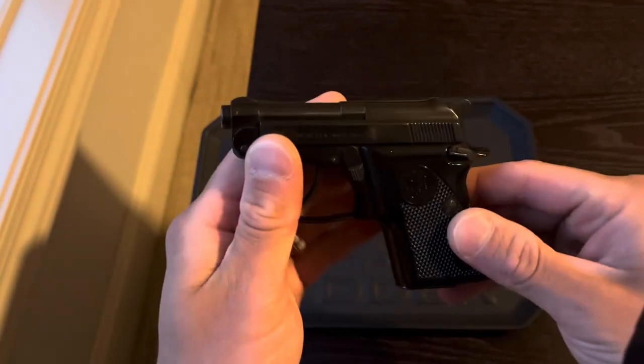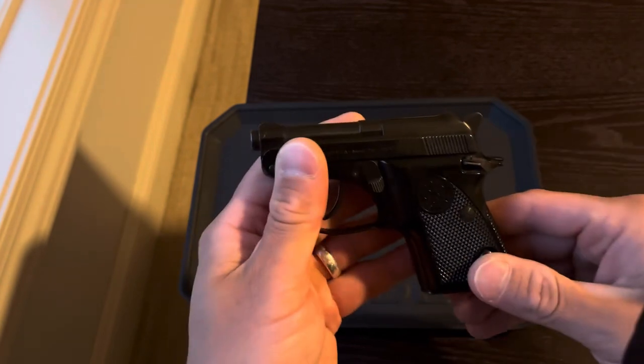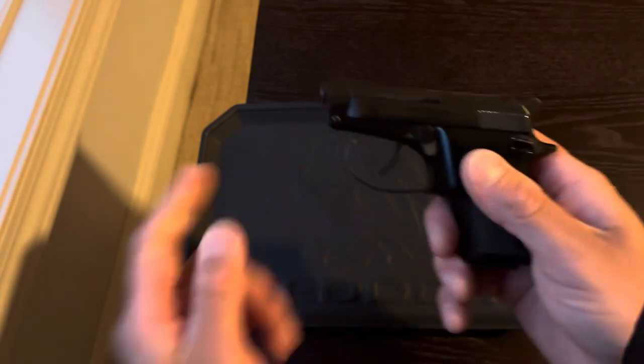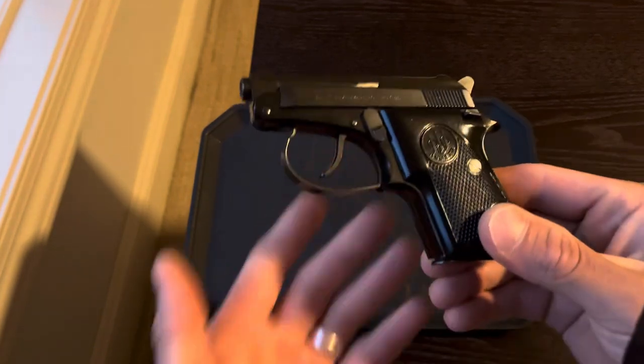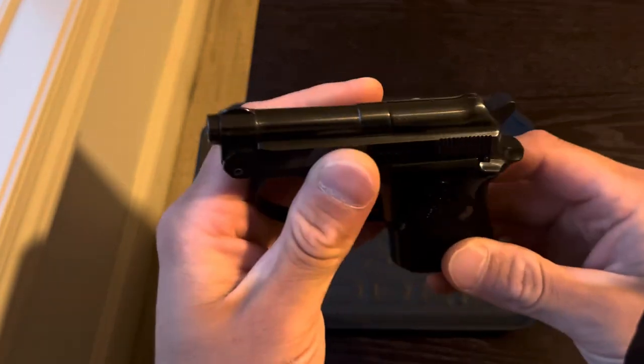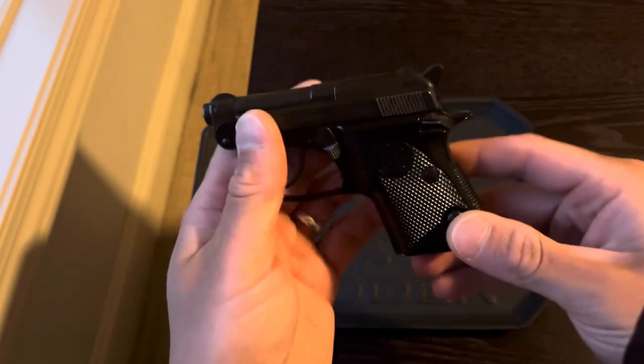A lot of these small Berettas were actually used by Israeli intelligence and Israeli assassins to take out people. They would throw little silencers on them, they'd be very easy to conceal, and unfortunately they were used in negative acts. But the point is, they trusted these things.